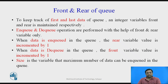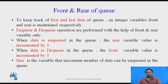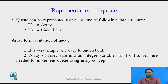To keep track of the first and last data of the queue, integer variables front and rear are maintained respectively. Enqueue and dequeue operations are performed with the help of the front and rear variables only. When data is enqueued, the rear variable value is incremented by plus 1. When data is dequeued, the front variable value is incremented by plus 1. The size variable defines the maximum number of data that can be enqueued in the queue.